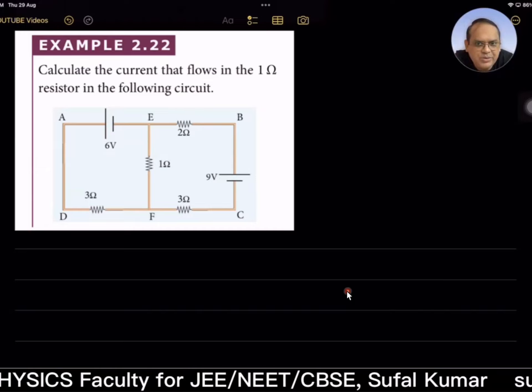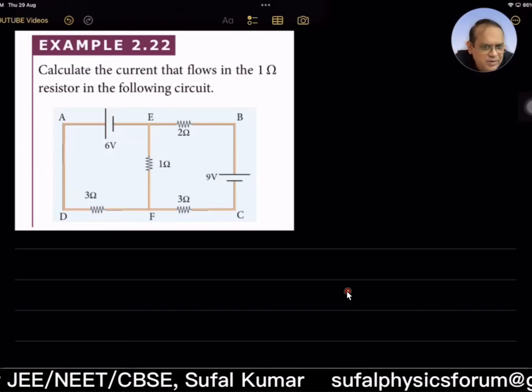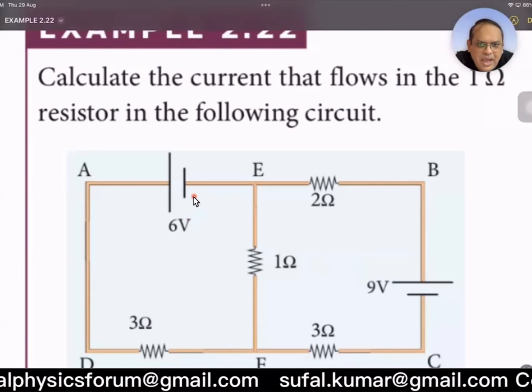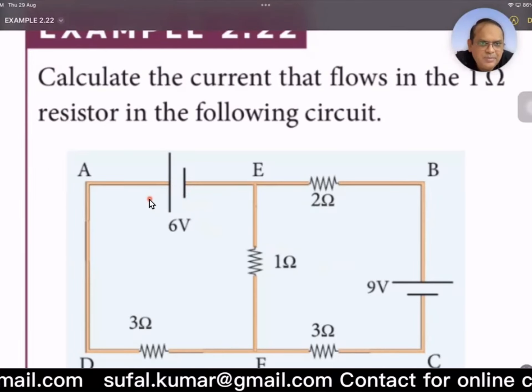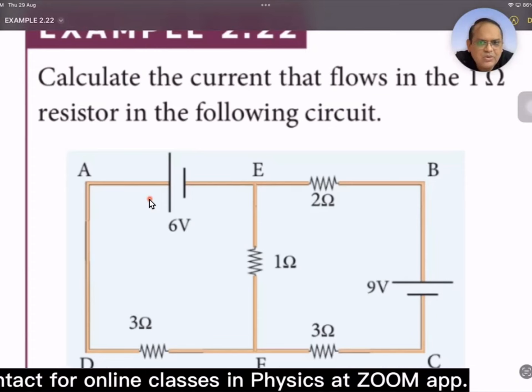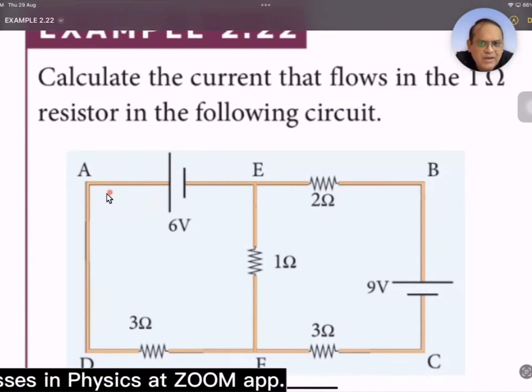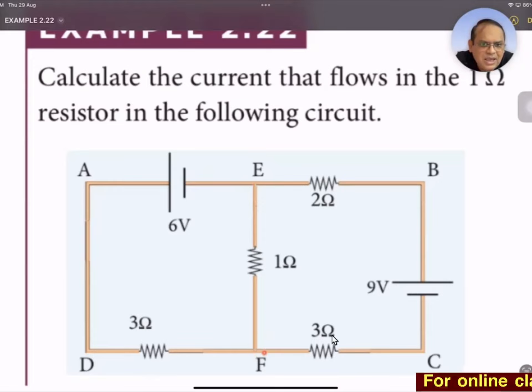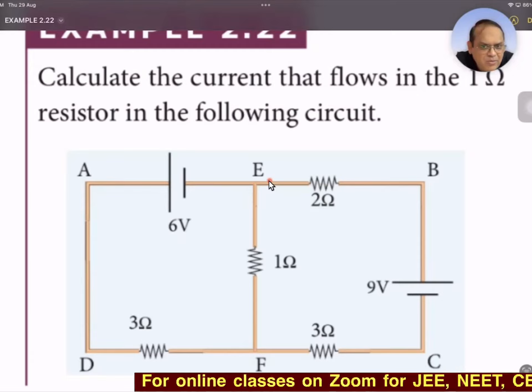Now let us consider two equations again. One thing more I would tell you: here we have how many closed loops? Probability of closed loops—one ADFEA, and another is EFCBE, and one more is there, the outer loop.